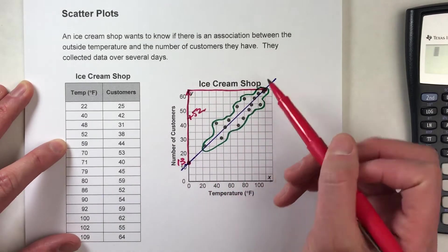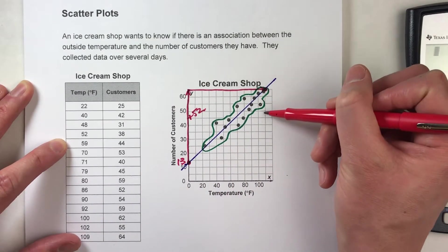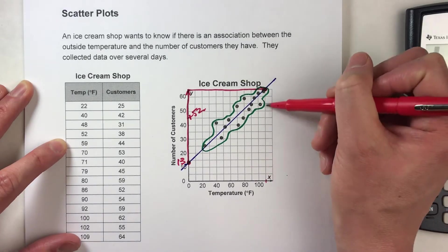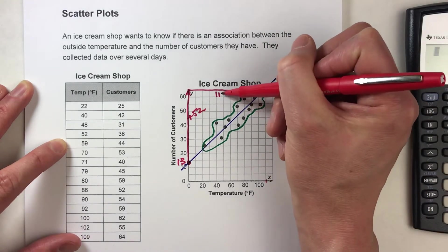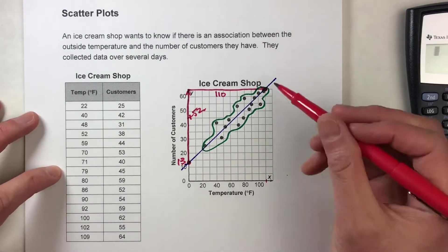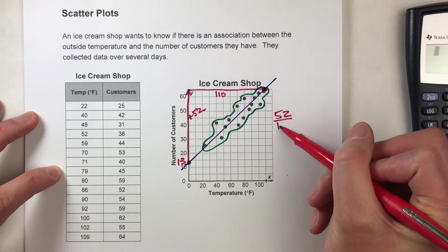Now my run, it goes over to, this looks like it's about, it looks like it hits the line actually at 110. So we'll say the run is 110. So my slope is 52 over 110.